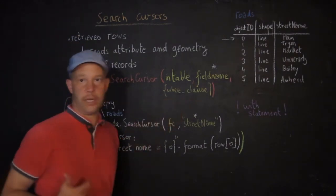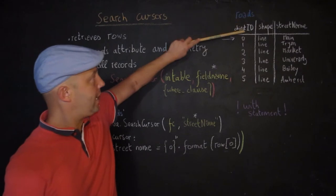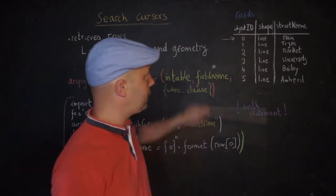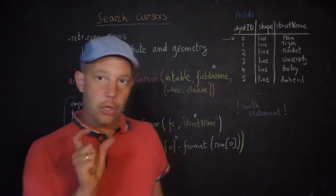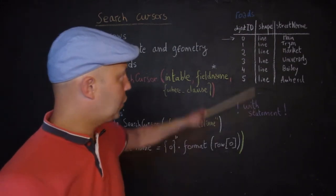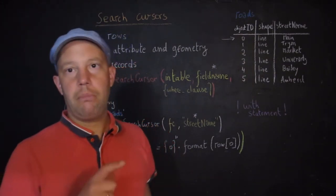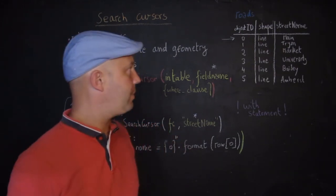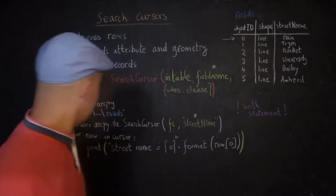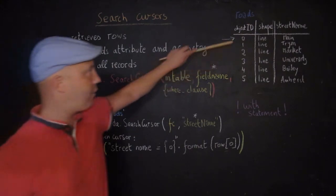Let's take an example. I have a table called road made out of three columns: the ID, the shape, and an attribute containing the street name. The shape field is present because it's a feature class or shapefile — it could be point, polyline, or polygon, those being the three main types.